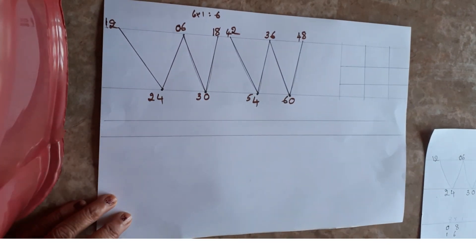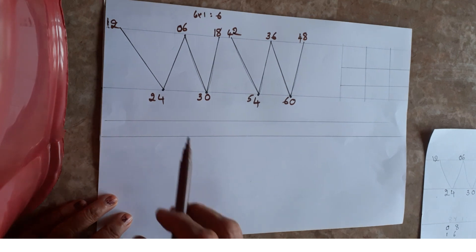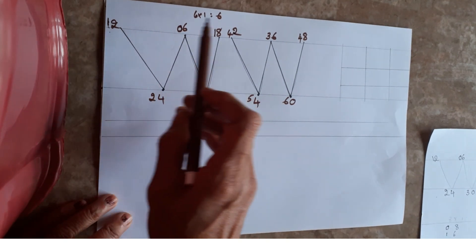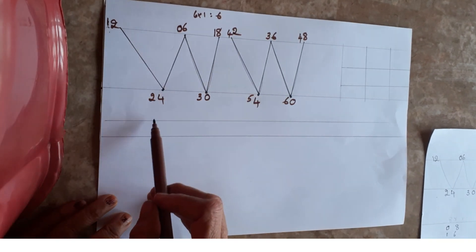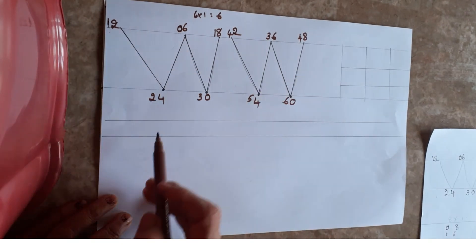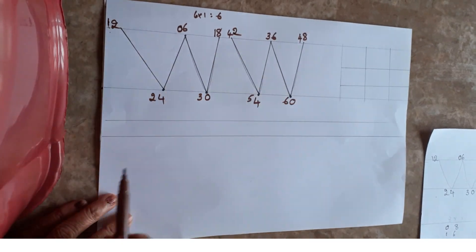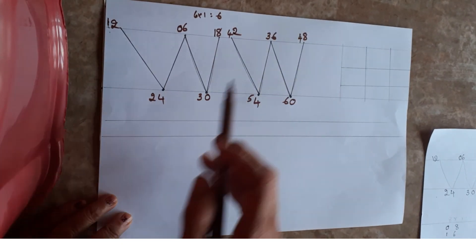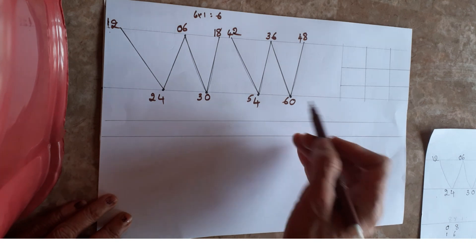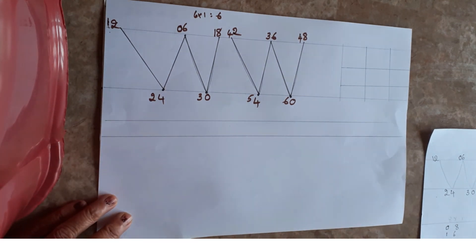Continue: after four write five, after five write six. That's all for the sixth table. See: 6 ones are 6, 6 twos are 12, 6 threes are 18, 6 fours are 24, 6 fives are 30, 6 sixes are 36, 6 sevens are 42, 6 eights are 48, 6 nines are 54, 6 tens are 60.